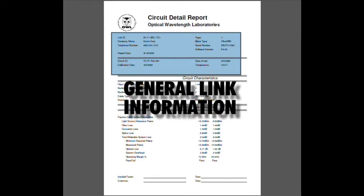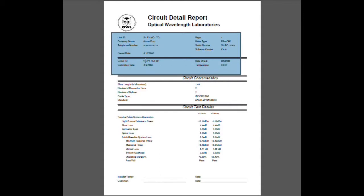Additional general information includes the type of meter that was used — in this case a Fiber OWL — the meter serial number and firmware version, date of test, temperature, and other general information about this particular run.